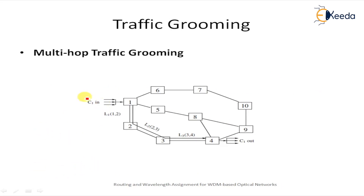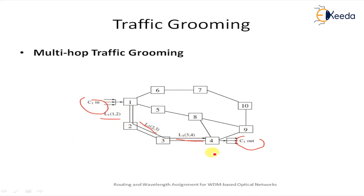In the multi-hop traffic grooming example, connection C1 can be carried by multiple light paths: L1, L2, and L3. Different light paths are provided between nodes — 1 to 2, 2 to 3, and 2 to 4 — using L1, L2, or L3 up to node 4, demonstrating multi-hop traffic grooming.